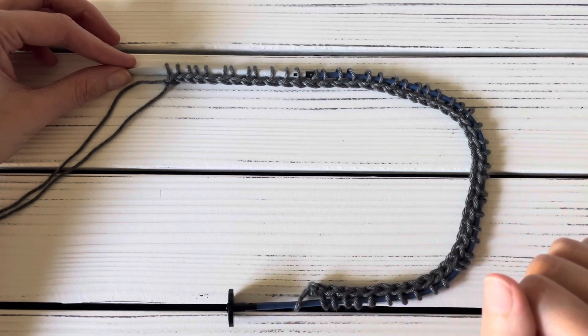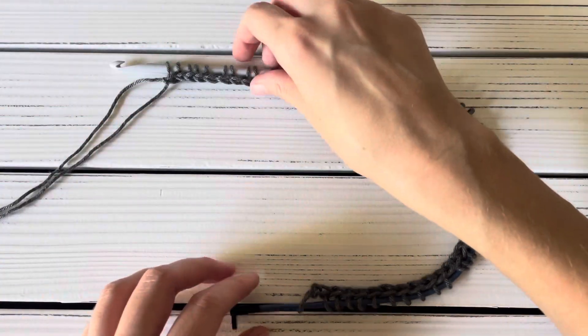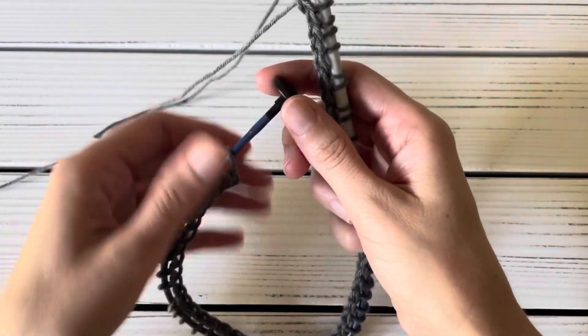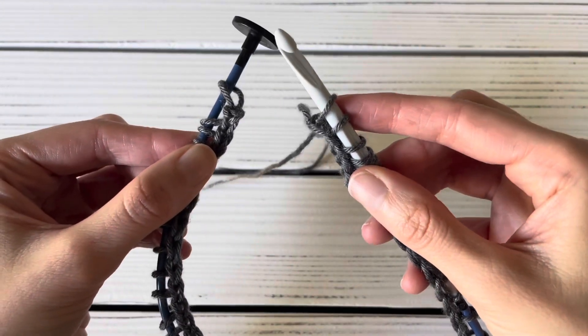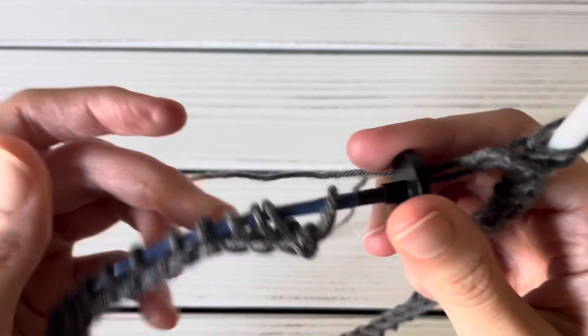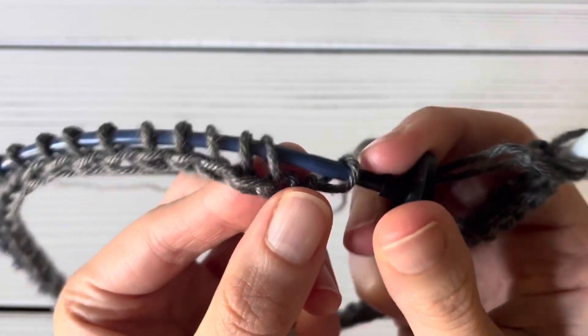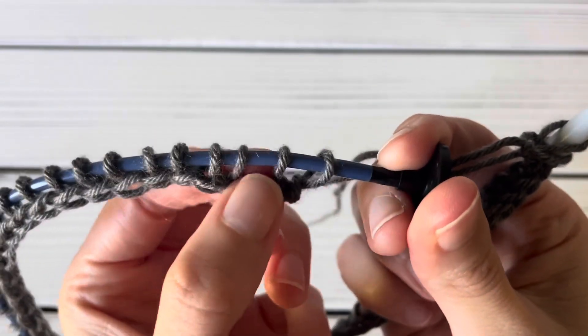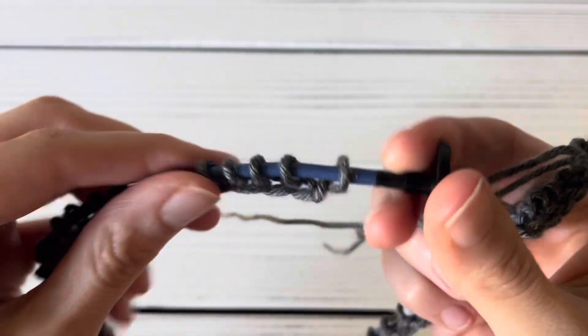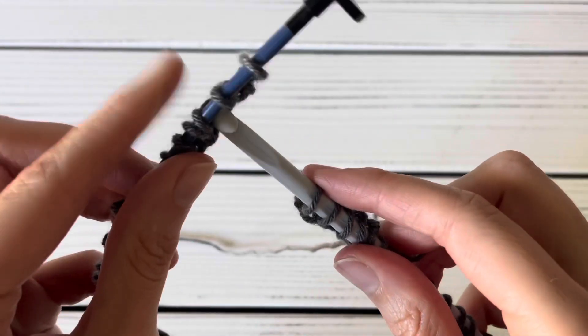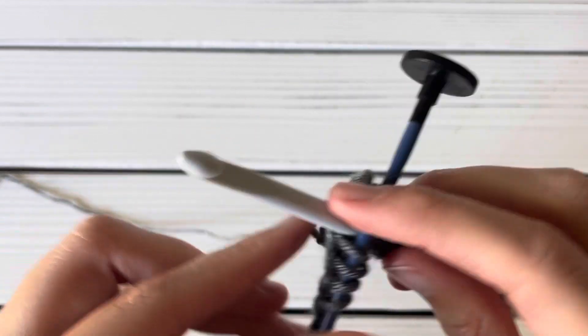Before we start working the return pass, we need to join our work in the round. To do that, we are going to insert the hook between the second and third loop that is on our cable. Right there, between that second and third loop where my finger is. Insert your hook between those two loops.